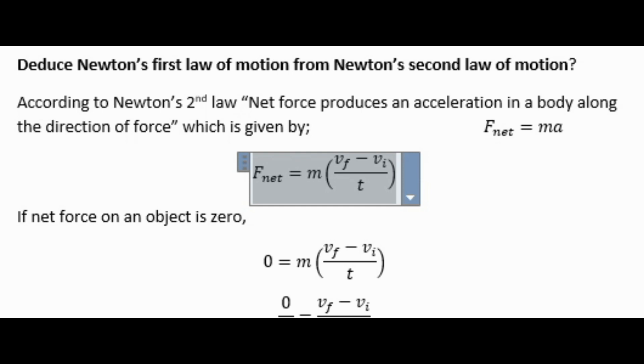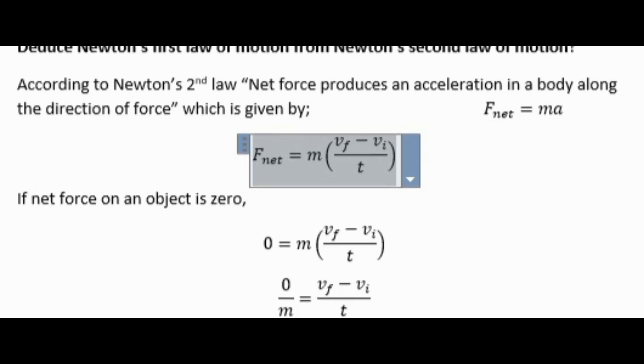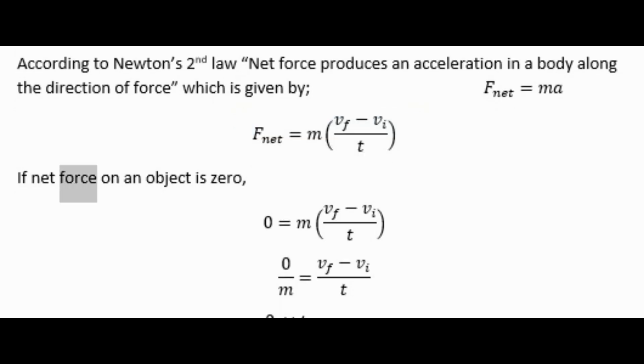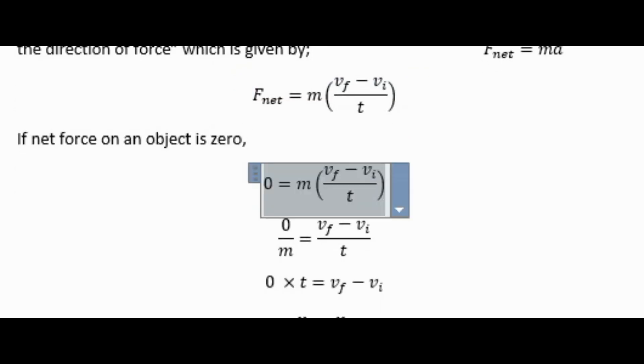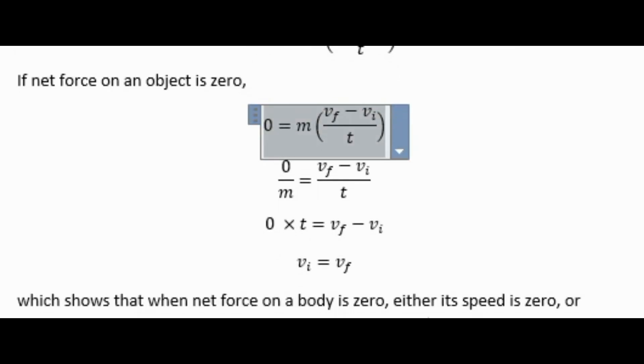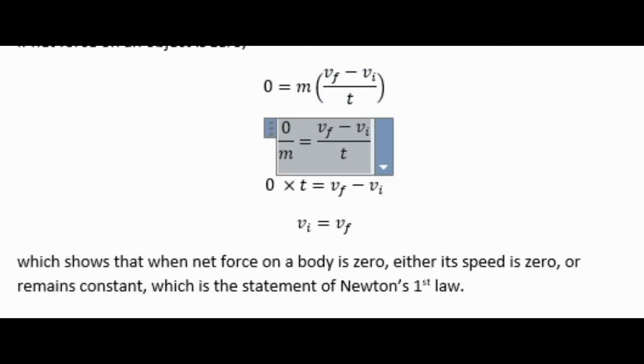F_net = m(v_f - v_i)/t. If net force on an object is zero: 0 = m(v_f - v_i)/t.